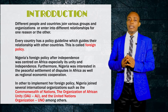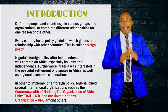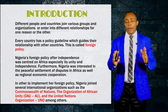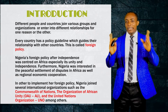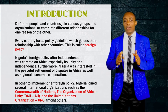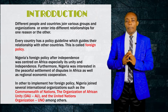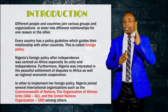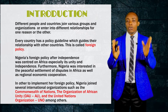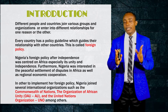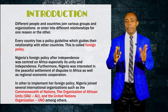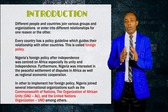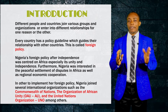Nigeria also has a foreign policy, and Nigerian foreign policy is directed at Africa. This means that Africa is the centerpiece of Nigerian foreign policy. Nigeria's foreign policy is aimed at maintaining unity in Africa, as well as the granting of independence to various African nations. This means that Nigeria has as its primary aim the decolonization of the continent, including the elimination of apartheid in South Africa, although it has ended. But these were what guided Nigeria's foreign policy after independence.